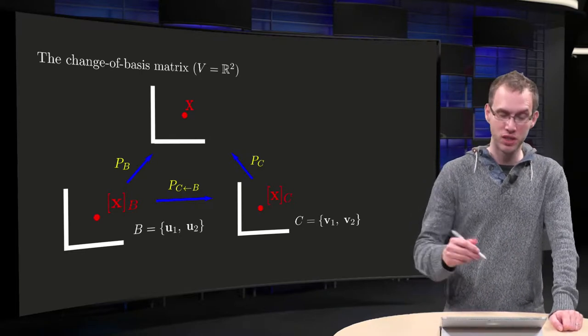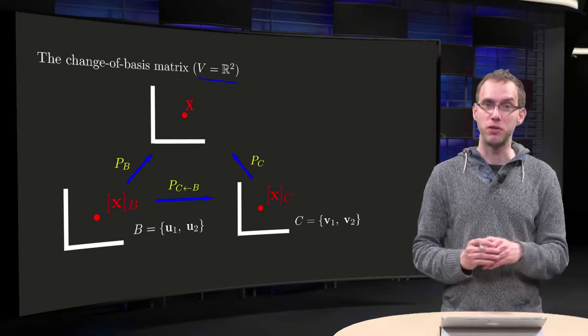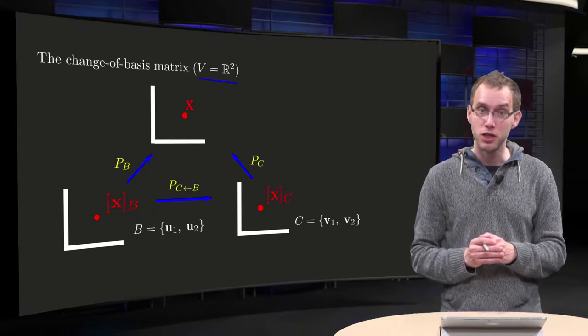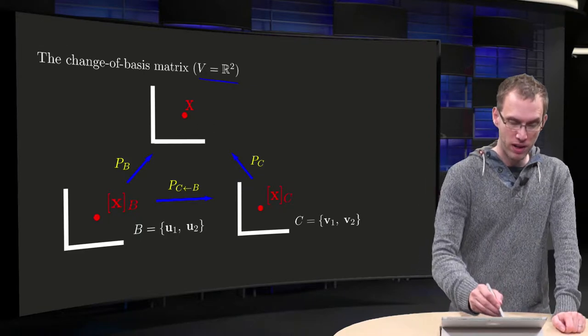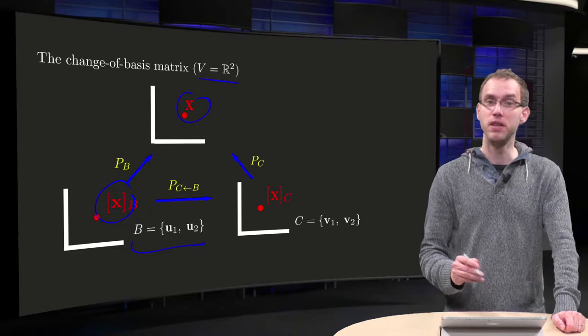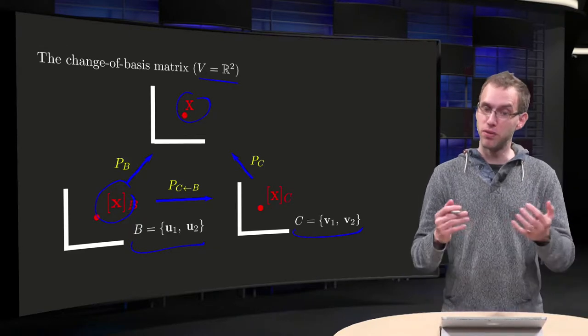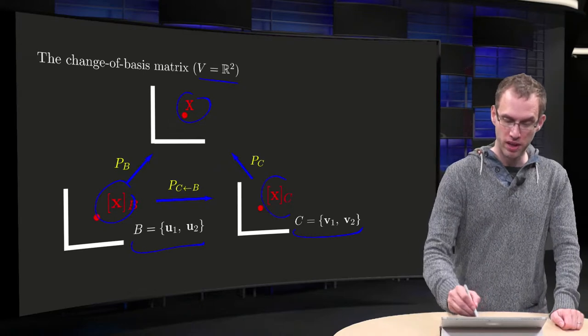What's the situation? Let's use R2 as our vector space to keep the matrices small. We have a vector x, coordinate vector xb, because we have a basis b consisting of u1 and u2 over here, a basis c consisting of v1 and v2, so coordinate vector xc.